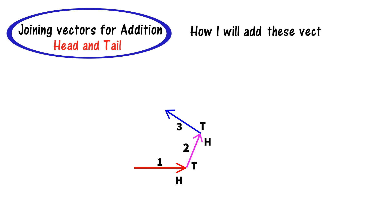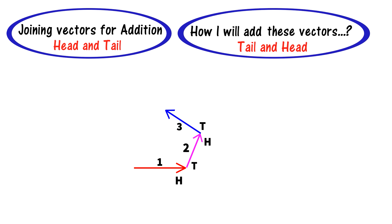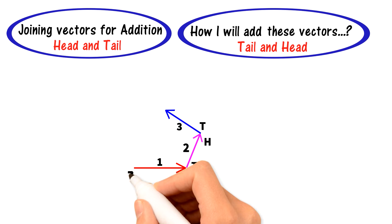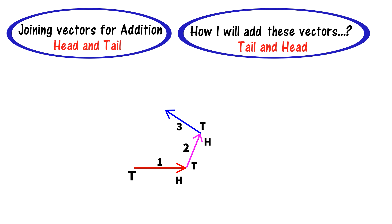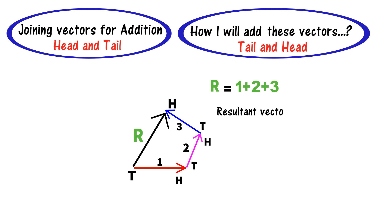To find the resultant, I will use another trick: the tail-to-head trick. I will join the tail of the first vector with the head of the third vector, and this gives the resultant vector — the vector that represents the addition of all three vectors: 1 plus 2 plus 3.